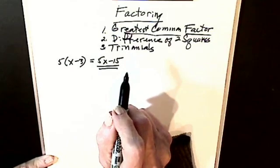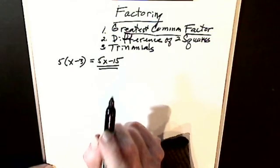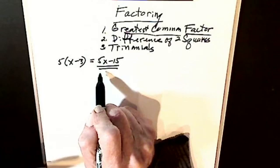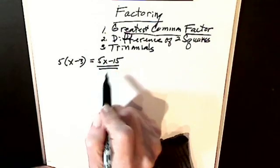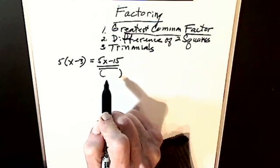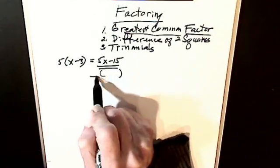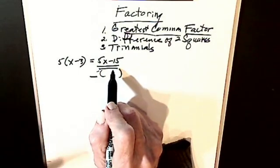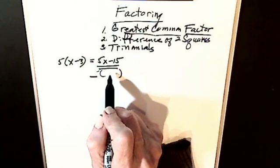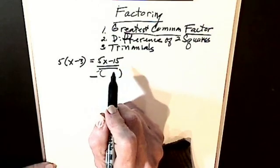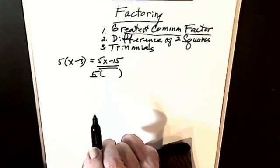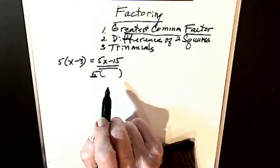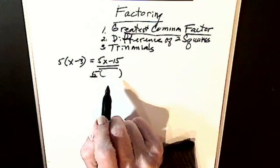So I know the first type is greatest common factor. I'm looking for a number, a letter, or a combination that will divide evenly into both terms. Greatest common factor is the opposite of distributive property — I'll have something on the outside, a monomial, and then I'll be left with my insides. I start with numbers then I do letters. Is there a number that will divide evenly into each term? Five. Is there an x in both terms? No, so I cannot factor out an x.